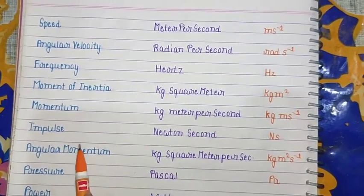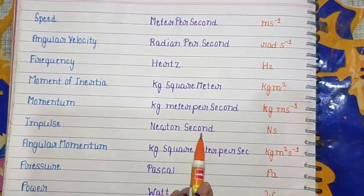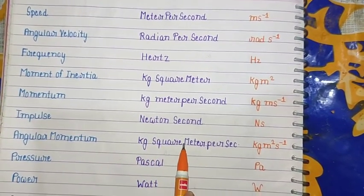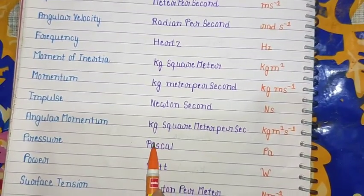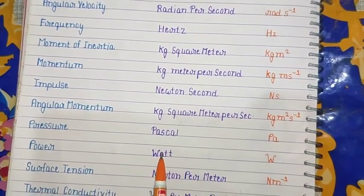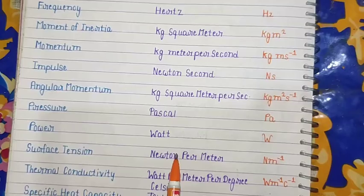Impulse - Newton second (N·s). Angular momentum - kilogram square meter per second (kg·m²/s). Pressure - Pascal (Pa). Power - watt (W). Surface tension - Newton per meter (N/m).